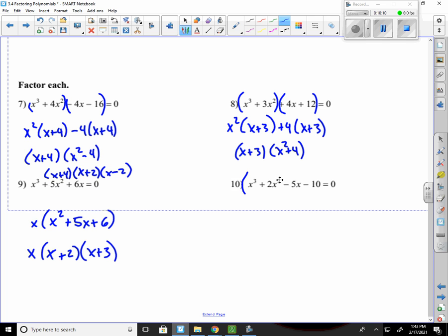And last one. Factor out an x squared. It gives me x plus 2. Factor out a negative 5. It gives me x plus 2. And just regroup them together. x plus 2 times x squared minus 5. This won't simplify because this is not a perfect square. So I'm done.